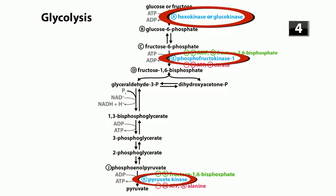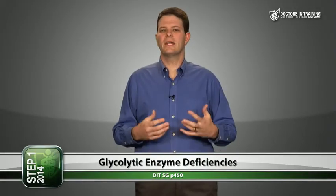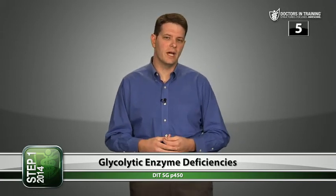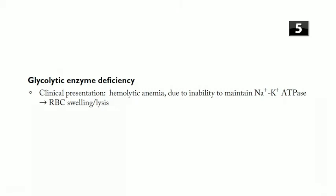Let's look at clinical aspects of the glycolysis pathway and consider what happens if you're deficient in some of these enzymes. These patients present with hemolytic anemia. Red cells don't have mitochondria, so they depend entirely on glycolysis to make ATP. If there's a problem with the glycolytic pathway, red cells can't make ATP, the sodium-potassium ATPase won't work, they can't regulate sodium and potassium homeostasis, the cells swell and lyse, resulting in hemolytic anemia. Pyruvate kinase deficiency is the most common glycolytic enzyme deficiency.